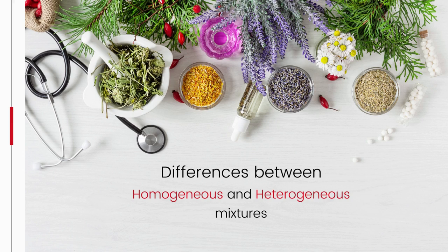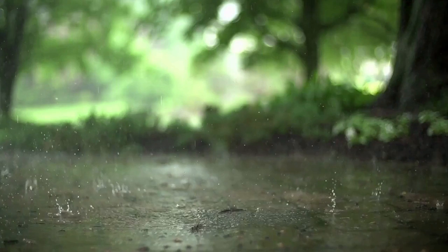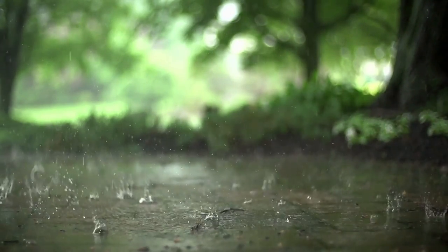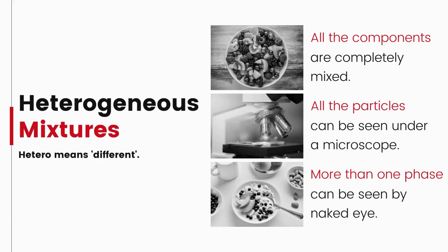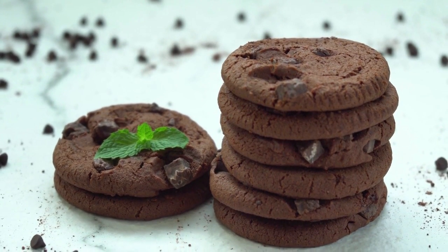What are the differences between homogeneous and heterogeneous mixtures? Homogeneous mixtures have components uniformly distributed throughout — only one phase of matter can be observed. 'Homo' means same; homogeneous mixtures are also called solutions. For example, rainwater is a homogeneous mixture. Heterogeneous mixtures have components that are not completely mixed; all particles can be seen under a microscope, and more than one phase can be seen by the naked eye. 'Hetero' means different. For example, chocolate chip cookies are a heterogeneous mixture.